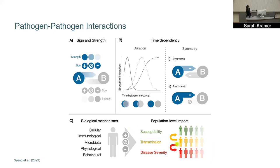We're also interested in the duration of this interaction — how long after being infected with pathogen A your susceptibility to pathogen B remains enhanced or reduced. Does this last for a week? Two months? We also care about symmetry: if symmetric, the effect of A on B is the same as B on A; if asymmetric, effects differ depending on which pathogen you encounter first. Mechanisms include modulation of the immune response and changing microbiota.